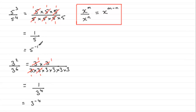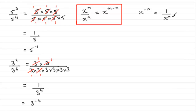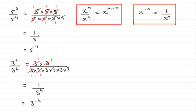Looking at these two answers: 5 to the power minus 1 when we have 1 over 5, and 1 over 3 to the 4 is the same as 3 to the power minus 4. This gives us a general rule for handling negative powers: x to the power minus n is exactly the same as 1 over x to the power n. That's a rule you should try and learn — it's really just an extension of our basic division rule.